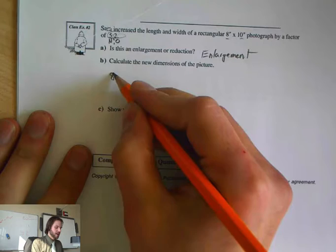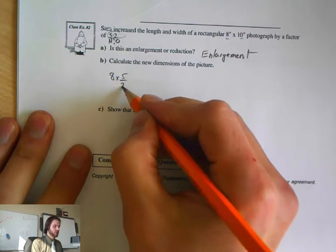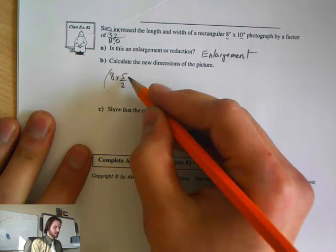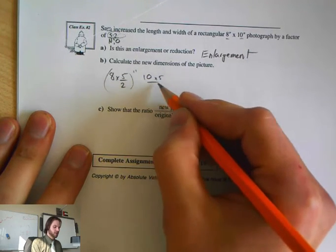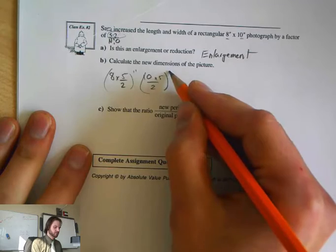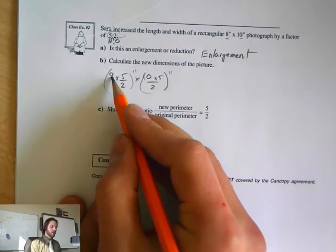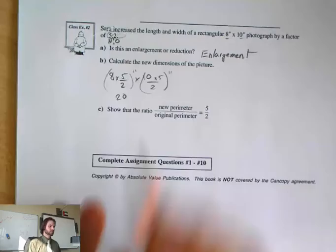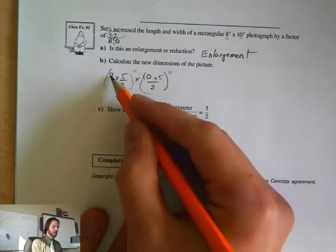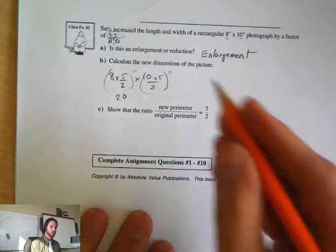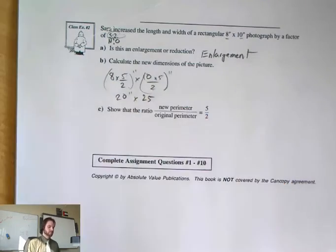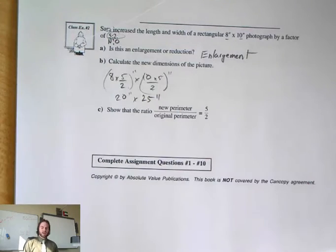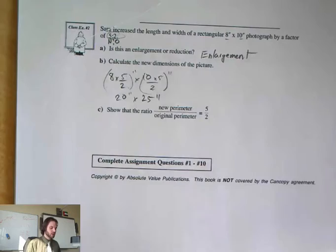Calculate the new dimensions of the picture. So it's going to be 8 multiplied by 5 divided by 2 inches. And then we're going to have 10 multiplied by 5 divided by 2. I'm going to end up getting 20 inches. 5 divided by 2 is 25. And that is my new dimensions.